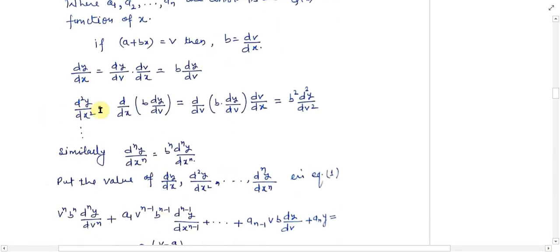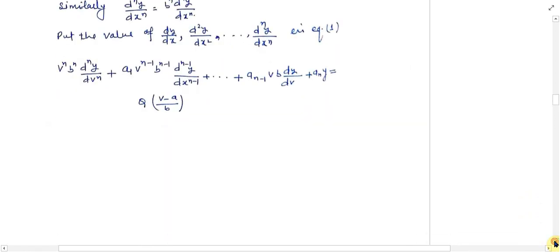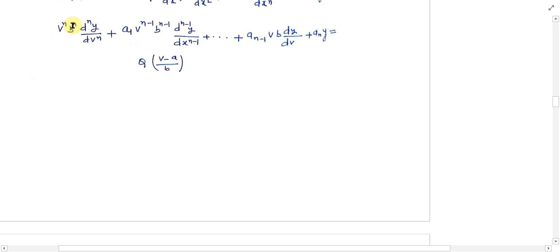d²y/dx² = d/dx(dy/dx) = d/dx(b · dy/dv), aur differentiation karne par d²y/dx² = b² · d²y/dv² milta hai. Isi tarah se d^n y/dx^n = b^n · d^n y/dv^n milta hai. Dy/dx, d²y/dx², aur d^n y/dx^n ki values equation 1 mein put karne par, equation ki form milti hai: v^n · b^n · (d^n y/dv^n) + p1 · v^(n-1) · b^(n-1) · (d^(n-1)y/dv^(n-1)) + ... = Q(x), jahaan x ki jagah (v - a)/b ho jata hai.